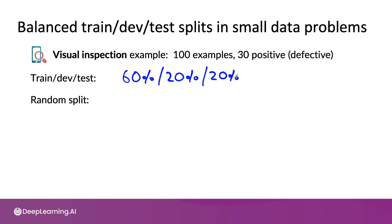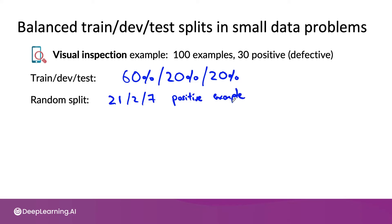Then if you were to use a random split, just by chance, it's not inconceivable that you may end up with 21 positive examples in train, two in dev, and seven in test.